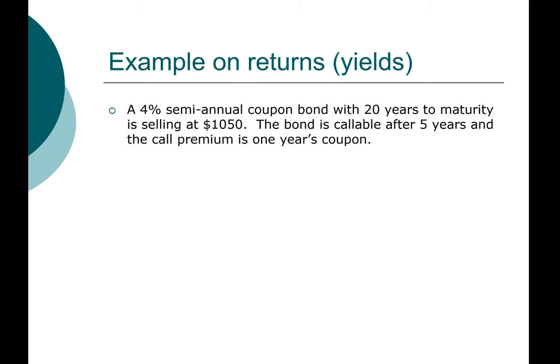Let's take a look at an example to see how we compute all these different yields. We have a 4% semi-annual coupon bond with 20 years to maturity, currently selling at $1,050. This bond is also callable after five years, and the call premium is one year's coupon. The coupon payment is $40 per year, or $20 every six months. We assume the face value of the bond is $1,000. The price today, which is the present value, is $1,050.